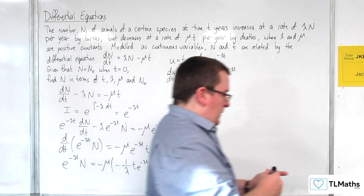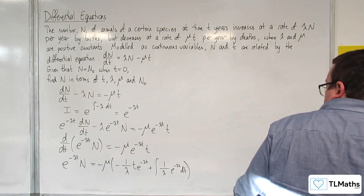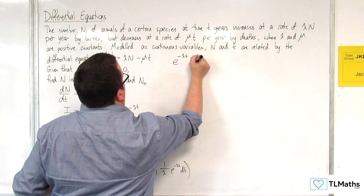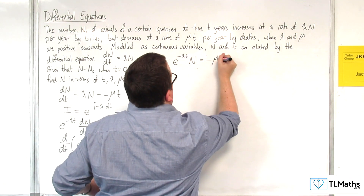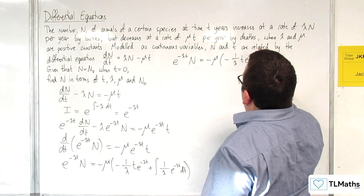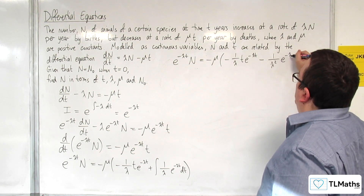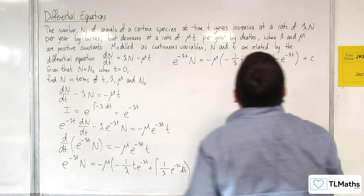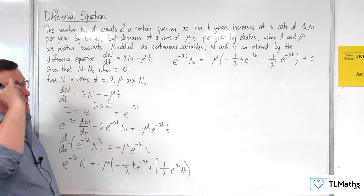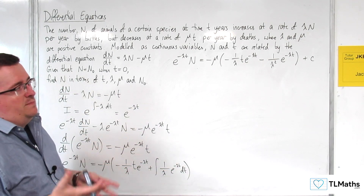Keeping the left-hand side, e^(−λt) · N equals, with the −μ factored out, we have −(1/λ)t · e^(−λt), and integrating (1/λ)e^(−λt) gives −(1/λ²)e^(−λt). I'm adding the constant of integration on the outside of the bracket rather than inside — a personal choice — so that I don't have an extra factor of μ involved. This makes things a little bit easier.